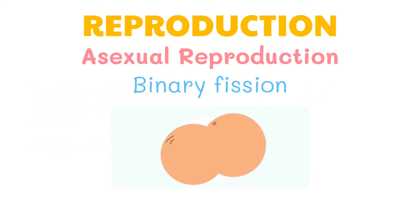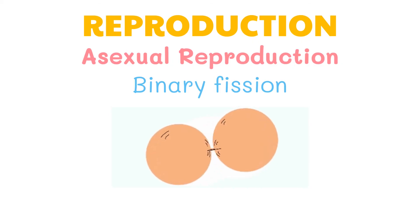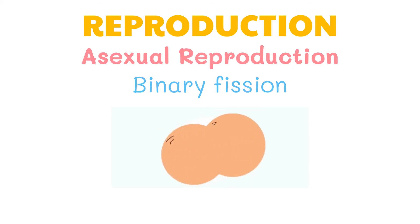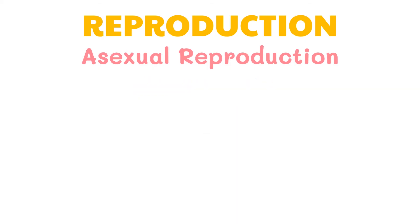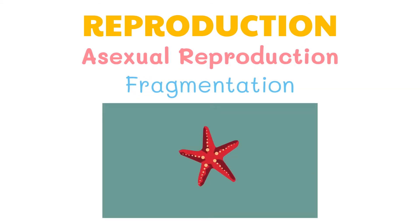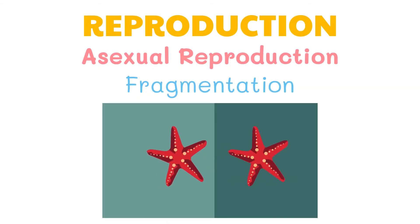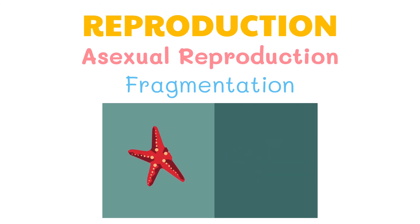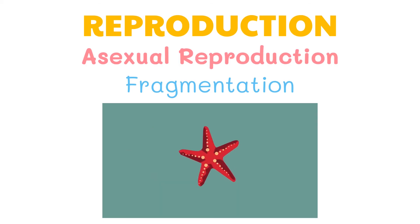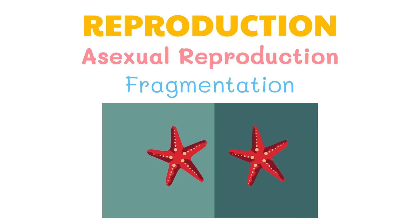Binary fission occurs when a parent cell splits into two identical daughter cells of the same size. Fragmentation occurs when a parent organism breaks into fragments or pieces, and each fragment develops into a new organism. Starfish reproduce this way — a new starfish can develop from a single ray or arm.